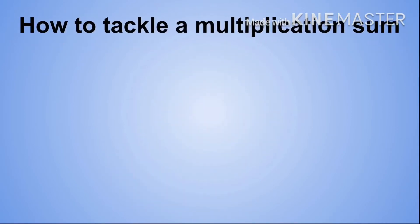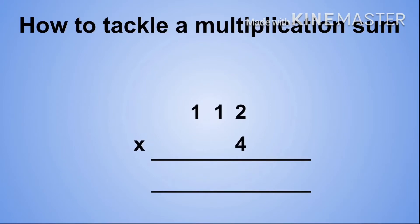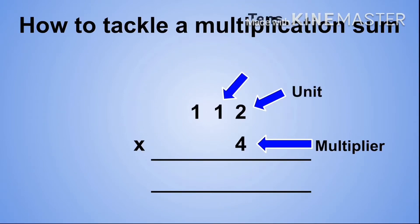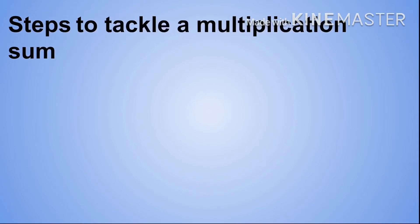Now we're going to move on to how to tackle a multiplication sum, but first let's look at a multiplication equation. A multiplication equation is made up of different parts. The 4 is known as the multiplier — the multiplier will change according to the sum. Then we have our unit, our tens, and our hundreds.